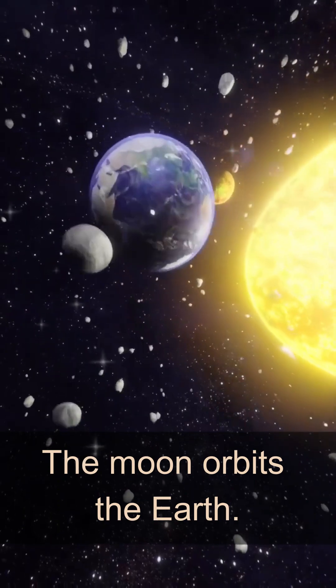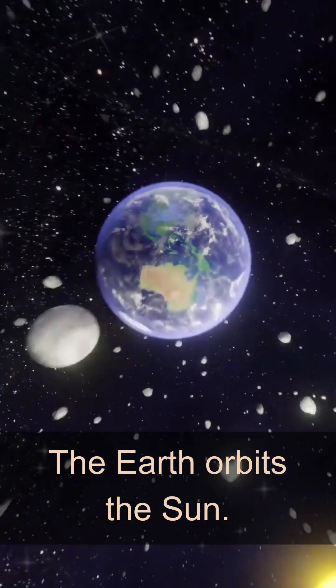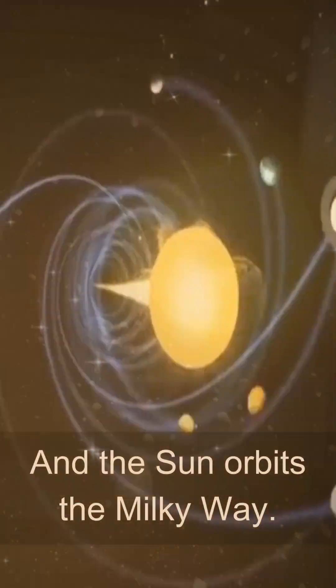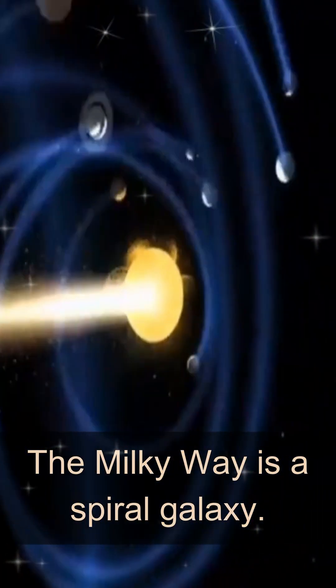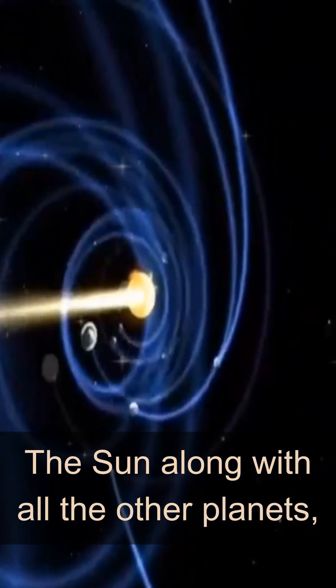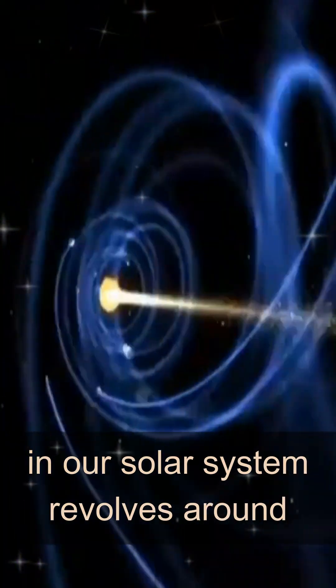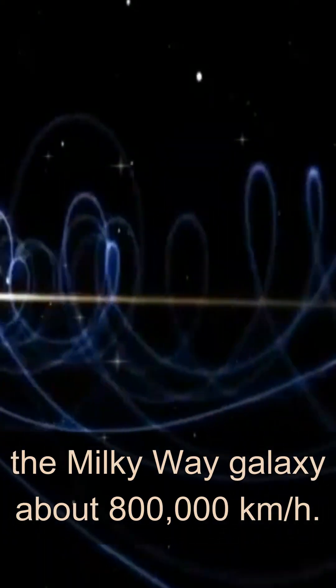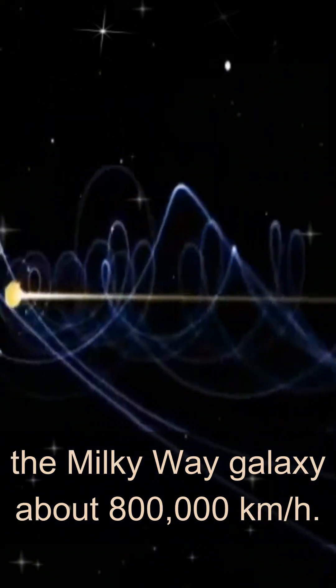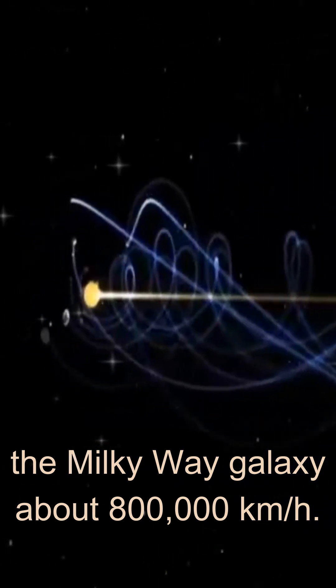The moon orbits the earth, the earth orbits the sun, and the sun orbits the Milky Way. The Milky Way is a spiral galaxy. The sun, along with all the other planets in our solar system, revolves around the Milky Way galaxy at about 800,000 km per hour.